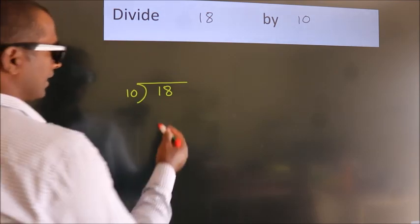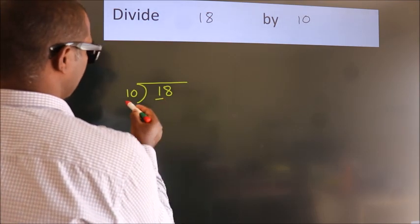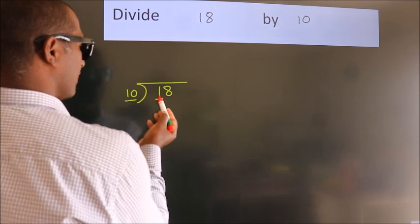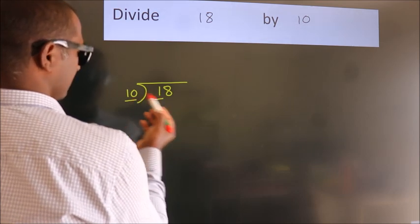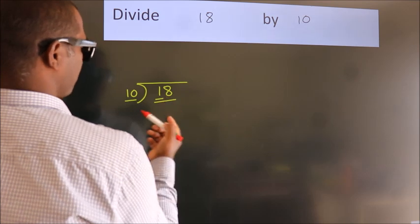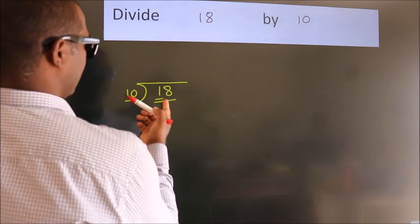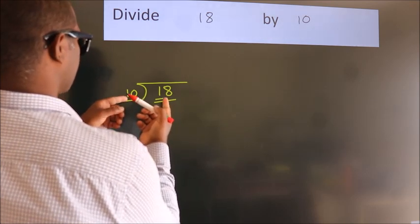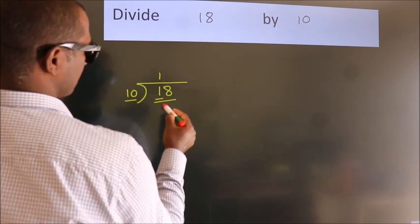Next, here we have 1, here 10. 1 is smaller than 10, so we should take 2 numbers: 18. A number close to 18 in the 10 table is 10, once 10.